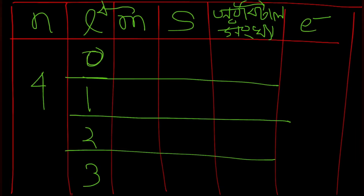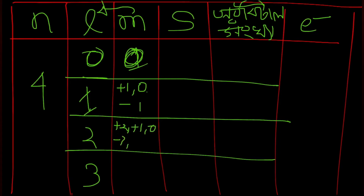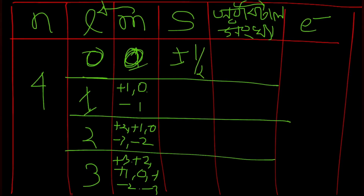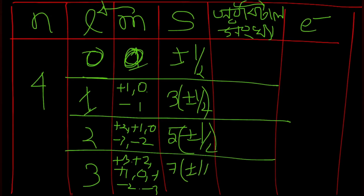So m is the magnetic quantum number. When l is 1, that means m takes values +1, 0, −1. Similarly, when l is 2, m takes +2, +1, 0, −1, −2. And the spin quantum number s is plus or minus one-half for each case.